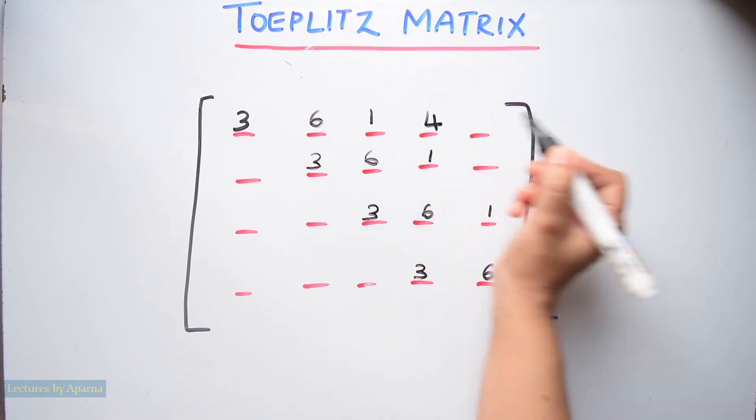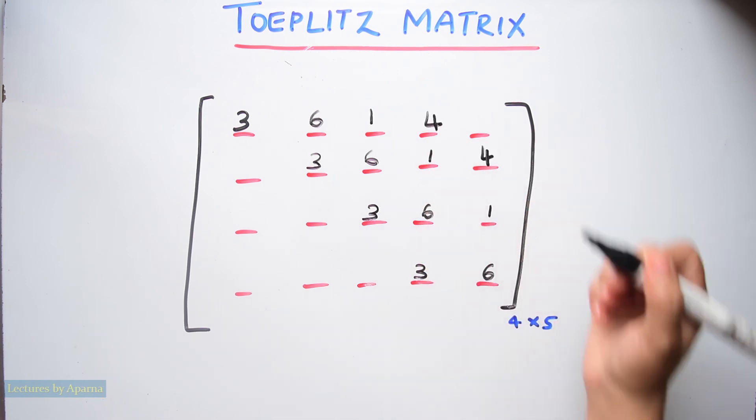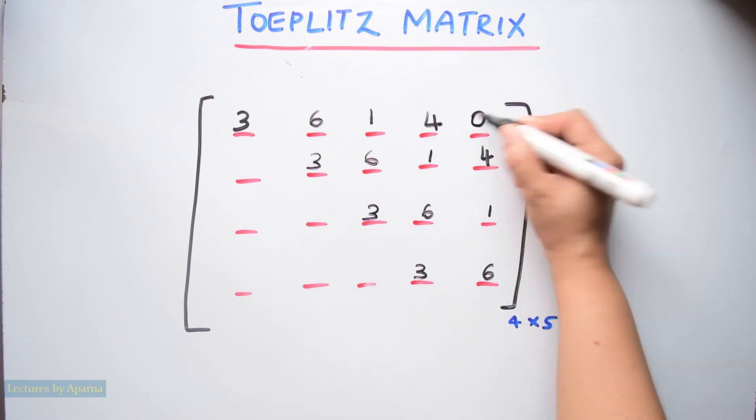Next I am taking a number 4. So this diagonal will be 4. And I am putting a 0 here.